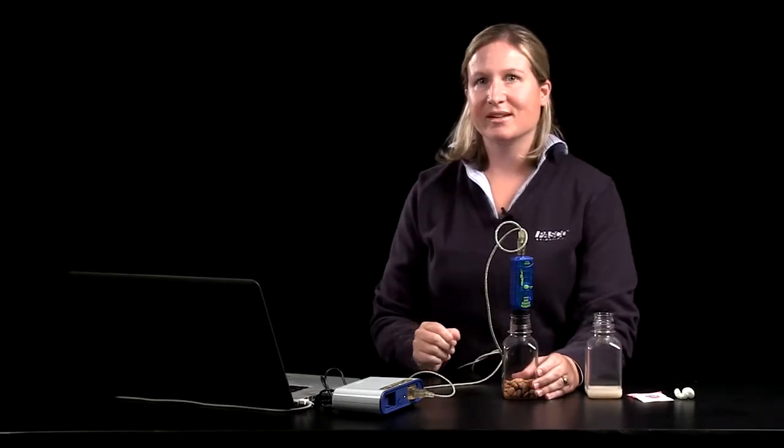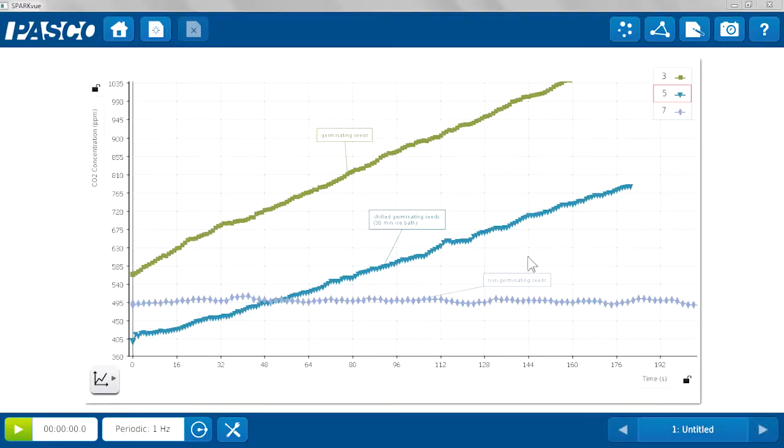The most basic comparison is usually germinating seeds to non-germinating seeds. On my screen here, I've got germinating seeds in green and the non-germinating in the blue with diamonds. You can see that the germinating seeds had a significant increase or caused a significant increase in the carbon dioxide in the bottle while the non-germinating seeds did not. That's a good way to bring in the connection of cellular respiration to the energy needs of an organism and their cells.